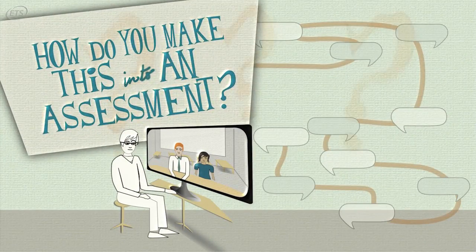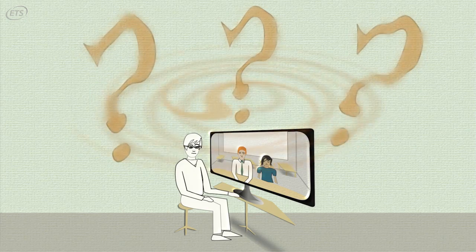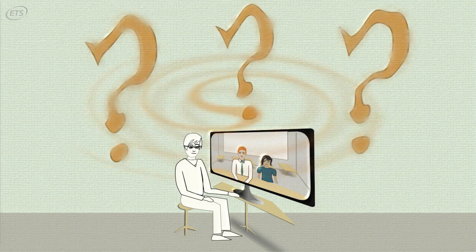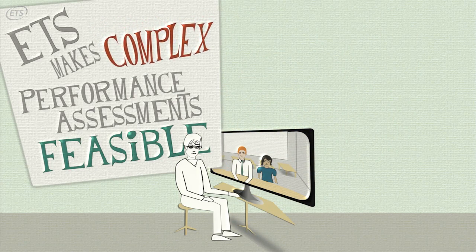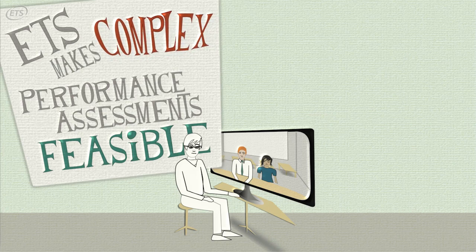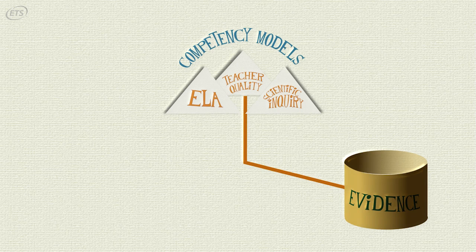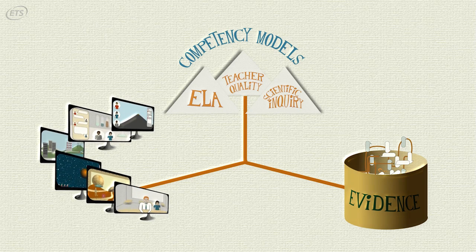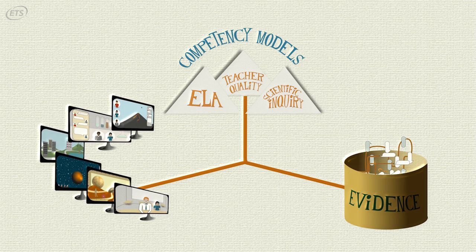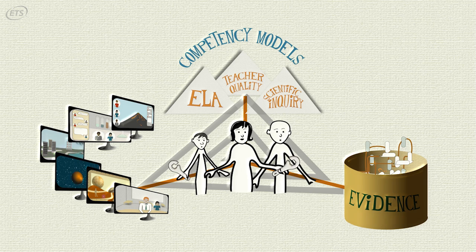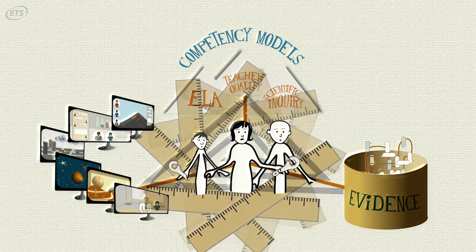How do you make this into an assessment? How do you create a situation where you can have an interaction to see what a person knows and is able to do? ETS's expertise comes in to make complex performance assessments feasible. ETS would be involved in fleshing out the competencies, connecting to what would be evidence of those competencies, the specific behaviors that you want to look for in an interaction, helping to create the classroom scenarios and tasks that would elicit that evidence from test takers, understanding how we would draw conclusions about what the test takers know and are able to do, and then understanding how we would score complex performance assessments.